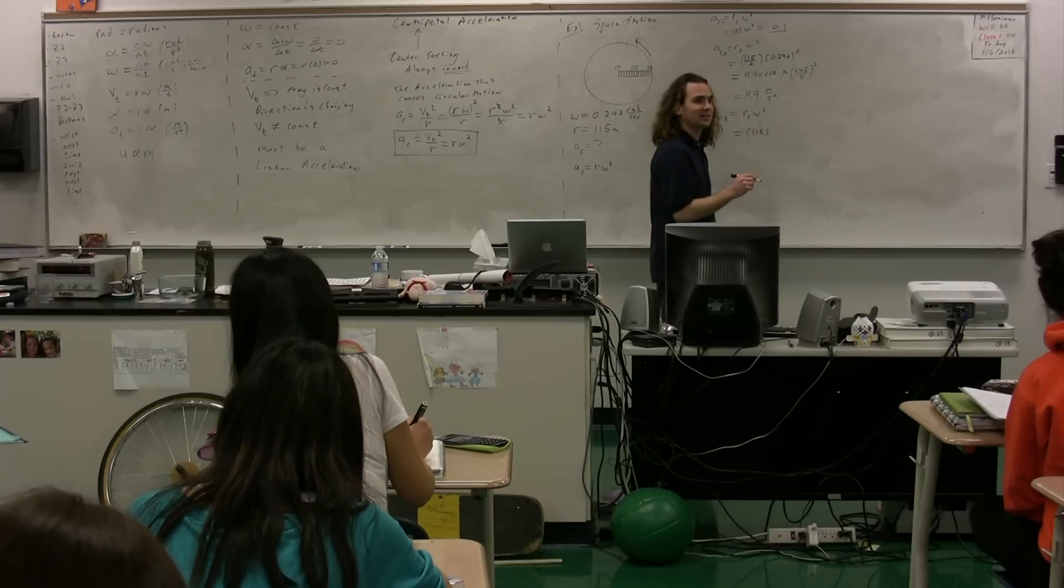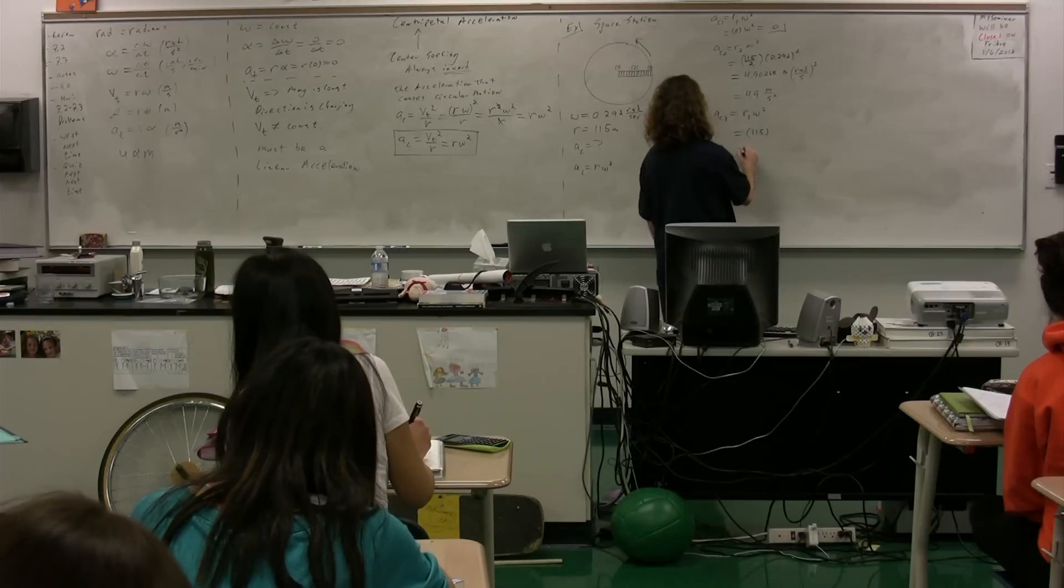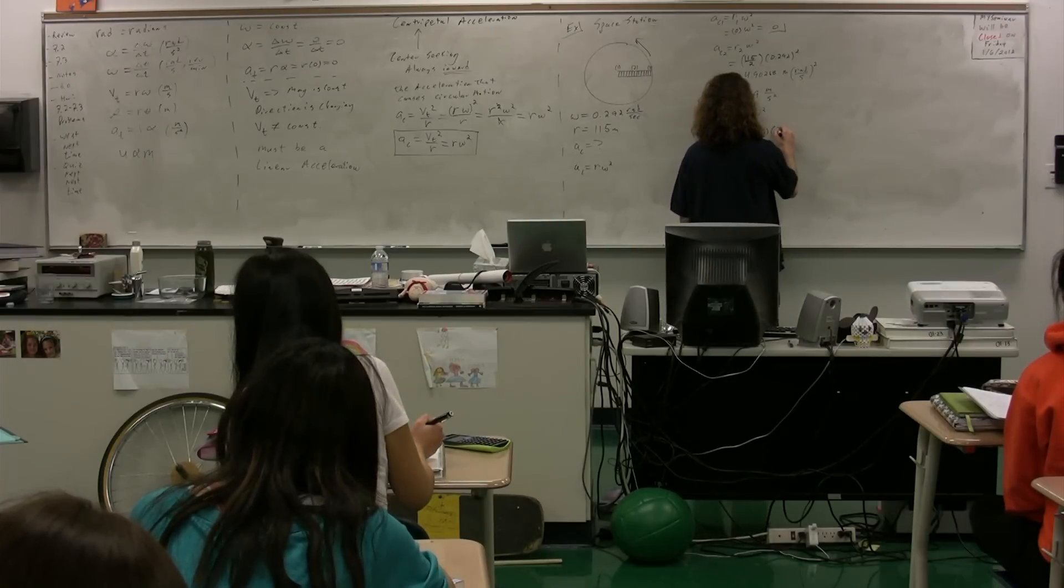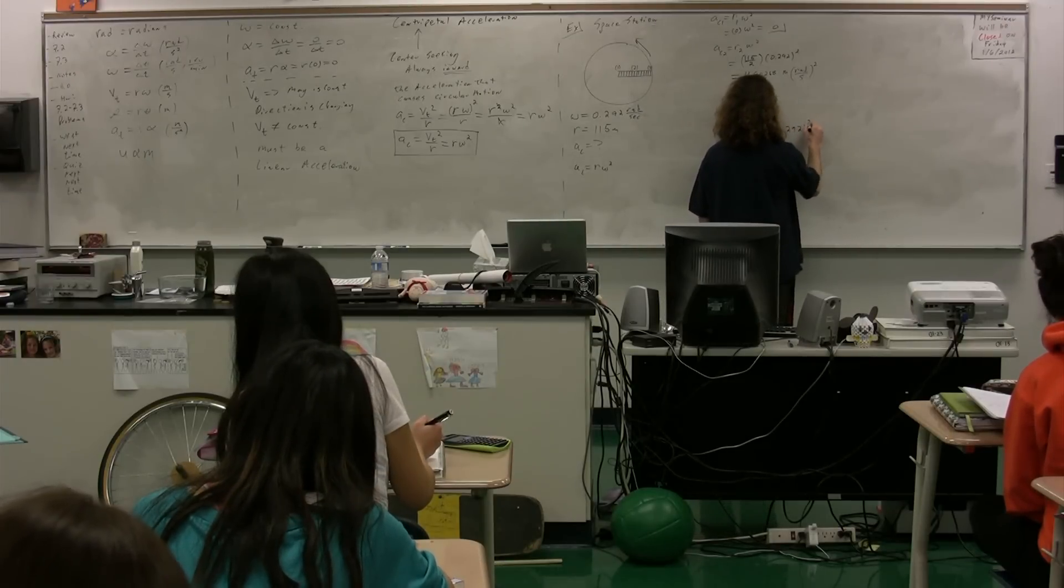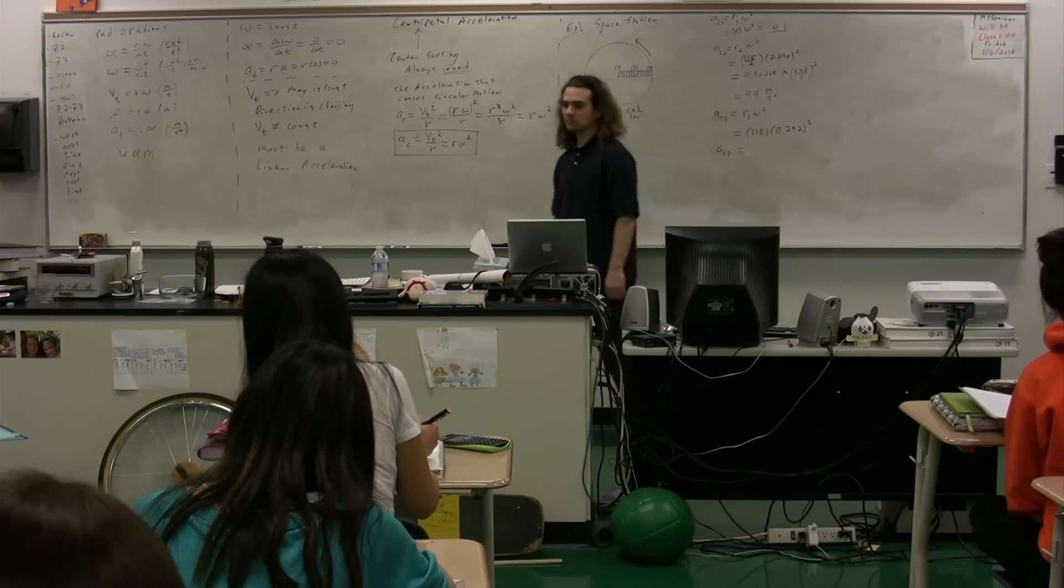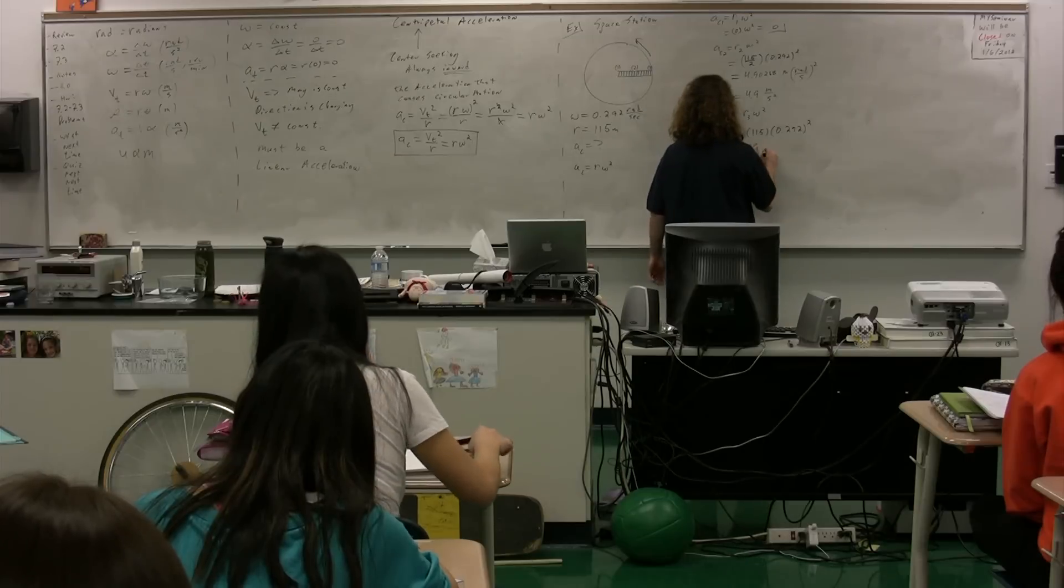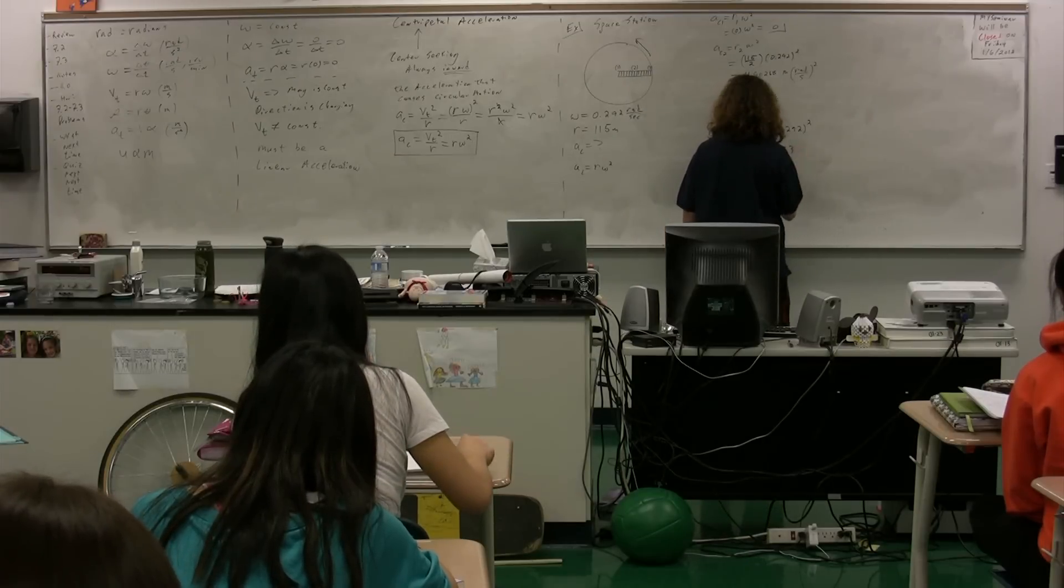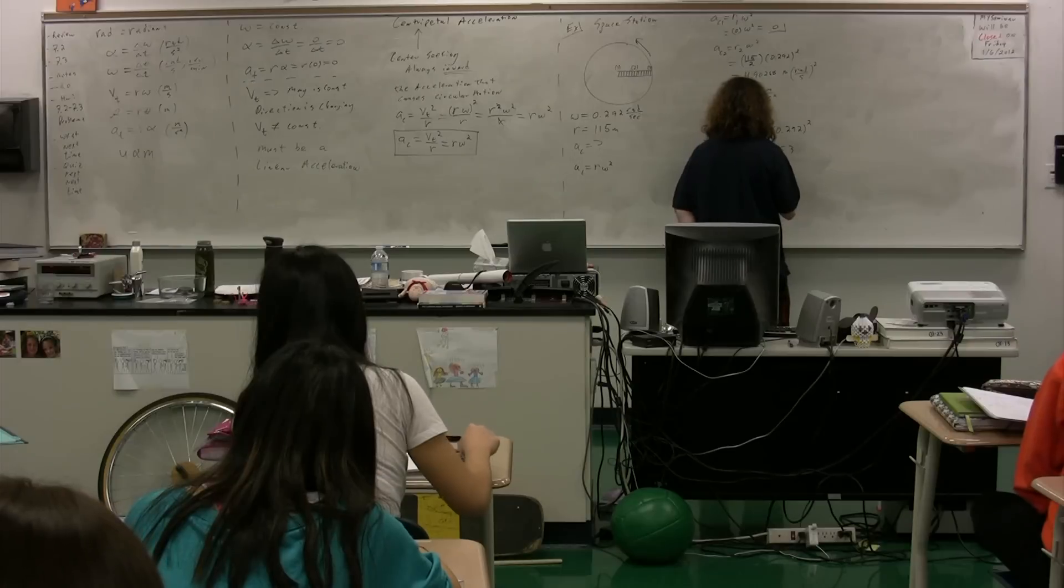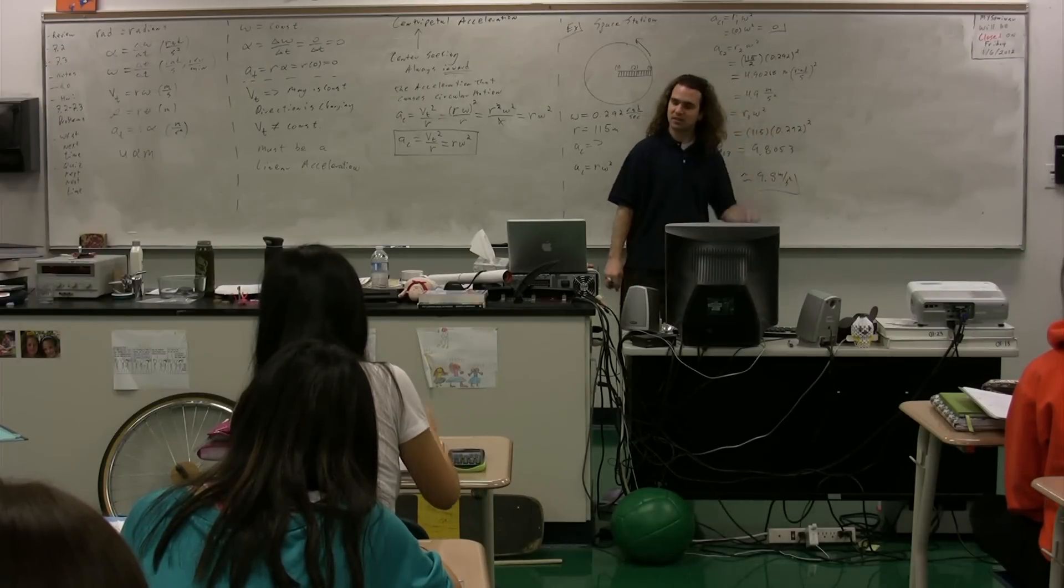115. Did you need your calculator for that? I never ask for the answers until we get everything on the board. So then it is multiplied by 0.292 squared. So the centripetal acceleration for part 3. 9.8053 with sig figs, 9.8 meters per second squared.